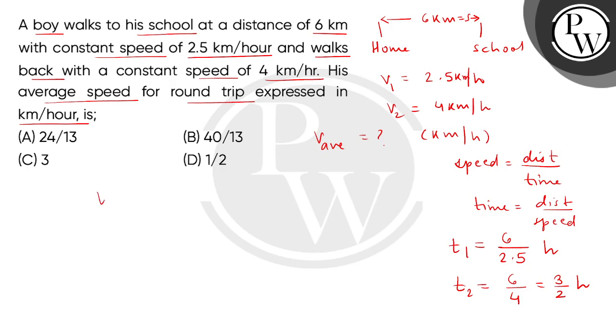And now we can use the average speed expression. What is the total distance? Forward journey 6 km plus backward journey 6 km, divided by T1 plus T2. So this will be 12 divided by (6/2.5 + 3/2).